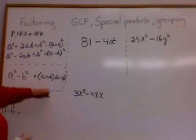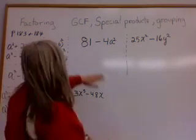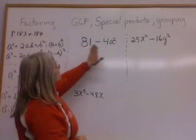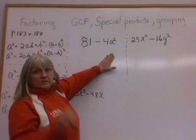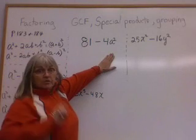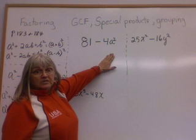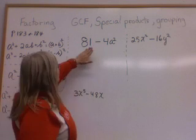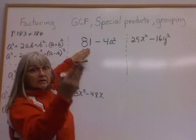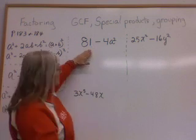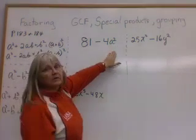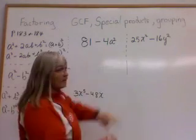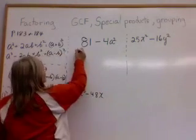Following the difference of two squares pattern, first example: there are two parts — that's the first clue, only two terms to factor. Next check: are they both perfect squares? 81 is 9 times 9. And 4a squared — how about 2a times 2a? So let's try the factoring.